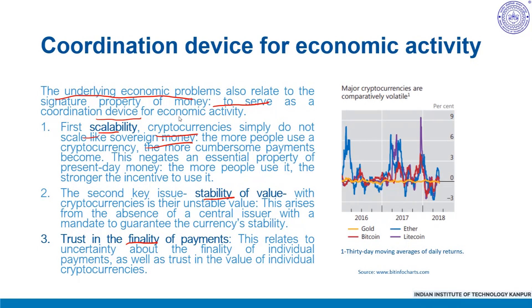Another aspect of the scalability issue is that updating the ledger is subject to congestion. In blockchain-based cryptocurrencies, new blocks can only be added at pre-specified intervals. Once the number of incoming transactions means that newly added blocks are already at maximum size permitted by the protocol, the system congests and many transactions go into a queue. With capacity capped, fees soar whenever transaction demand reaches the capacity limit, and transactions have at times remained in a queue for several hours. This limits cryptocurrency's usefulness for day-to-day transactions such as paying for a coffee — not to mention wholesale payments. The more people use cryptocurrency, the more cumbersome payments become, negating an essential property of present-day money.